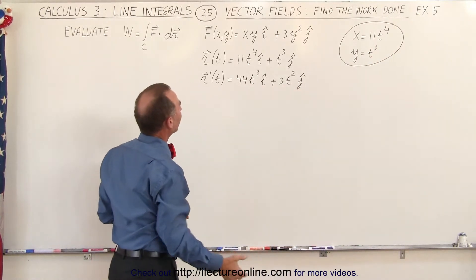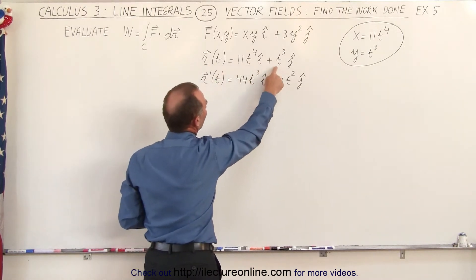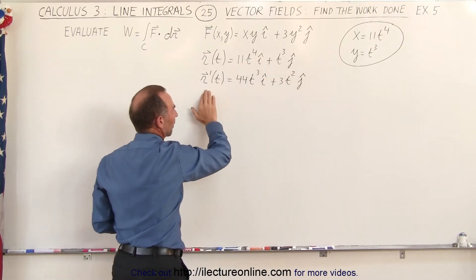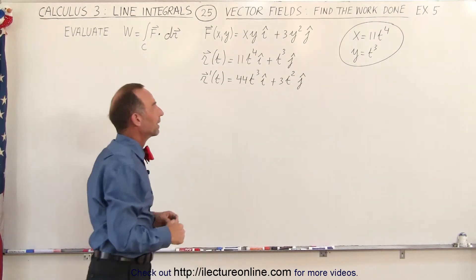And then when we plug that in here into our position vector, instead of x and y, we'll end up with 11t to the 4th and t cubed. And we take the derivative of the position vector, we get 44t cubed and 3t squared for the i and the j.